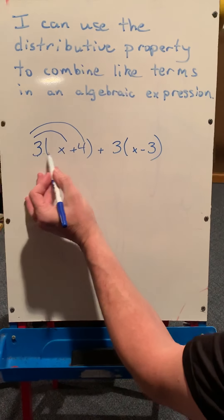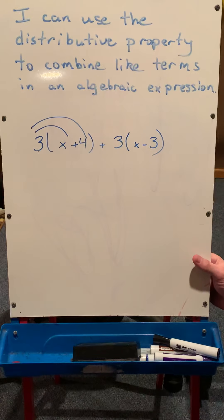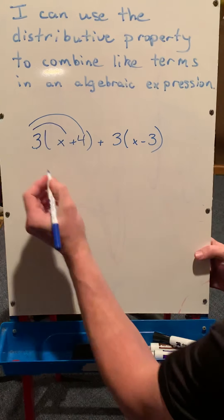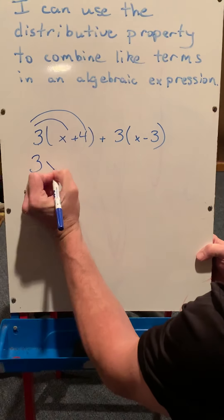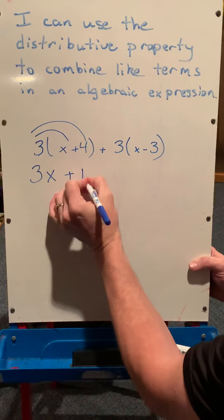So we'll start out with 3 times x, and again, you can write 3 times x, but most of the time we don't use a time sign because it looks like an x, so we just write 3x, which means 3 times x plus 3 times the 4 is 12.